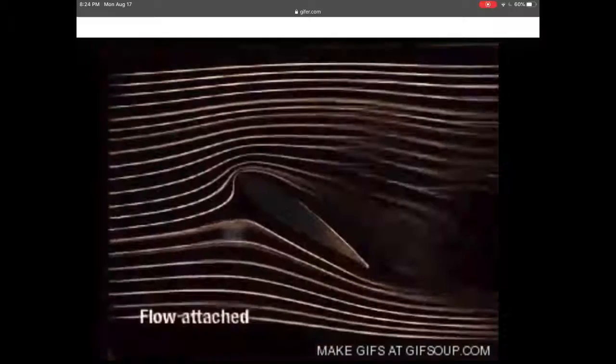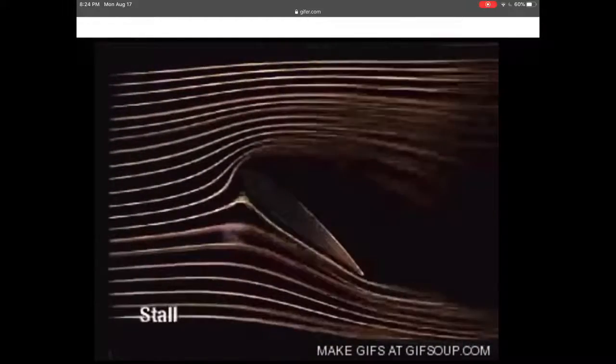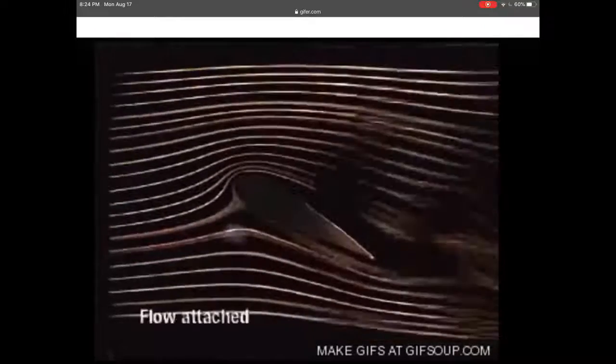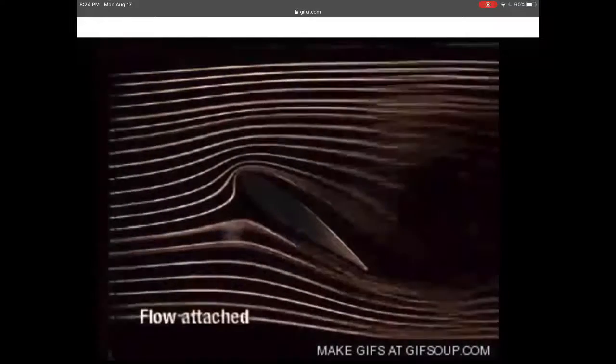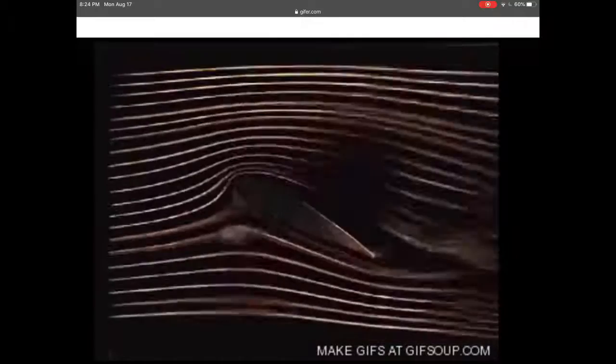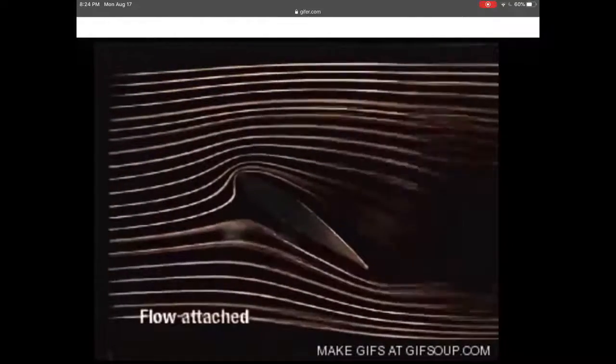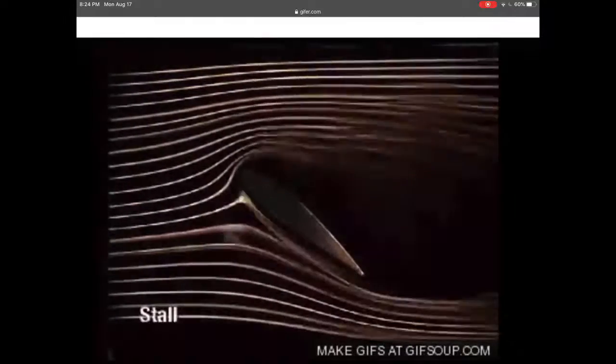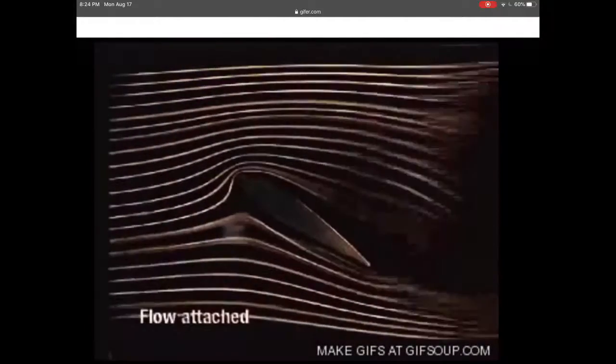Here we have an airfoil that is slowly increasing until it reaches that critical angle of attack. At first you can see these white streamlines are flowing over the top of the airfoil and they're almost reaching to the trailing edge. But then you can see there's a point where you get all this black space behind the airfoil and the white streamlines turn smoky—this is the point at which you exceed the critical angle of attack and you get a stall.